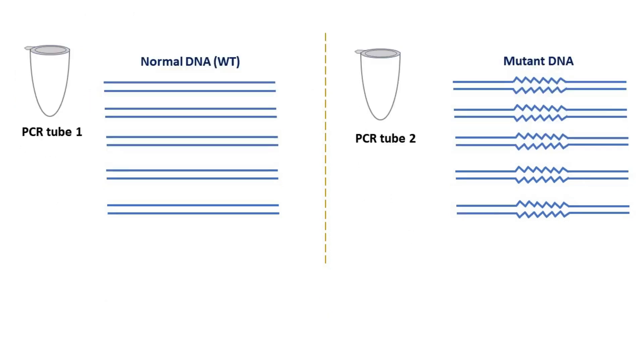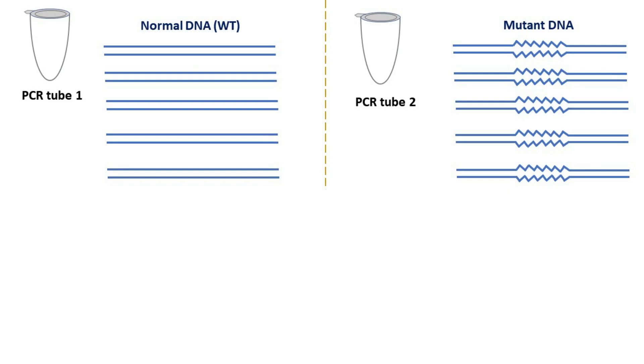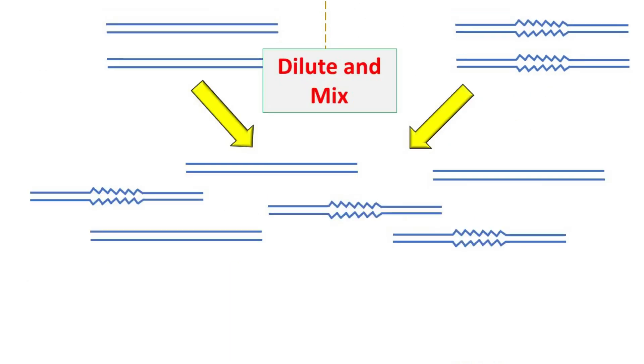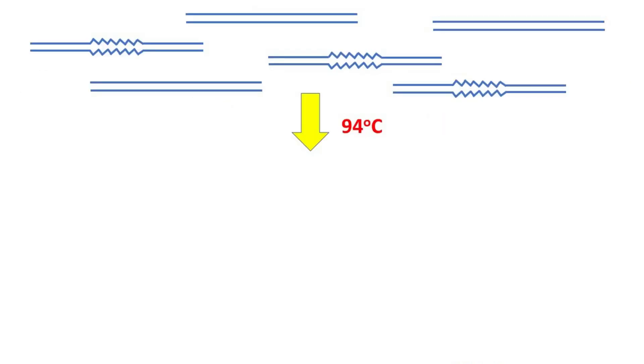Once PCR amplification is over, the samples are diluted and mixed together. This mixture is heated at 94 degrees Celsius. As a result, the DNA in the sample denatures.